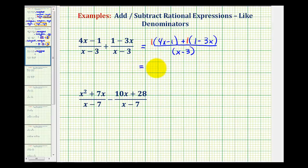This will leave us with, again, a denominator of the quantity x minus 3, and then we'll have 4x minus 1 plus 1 minus 3x. Now we'll combine like terms in the numerator. Notice here we have negative 1 plus 1, that's going to be 0, and then 4x minus 3x is equal to 1x or just x.